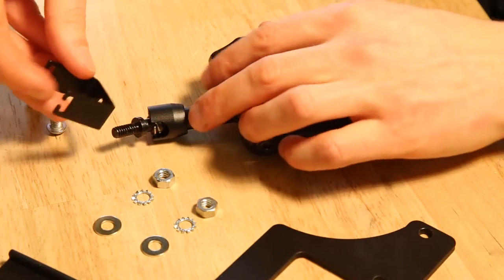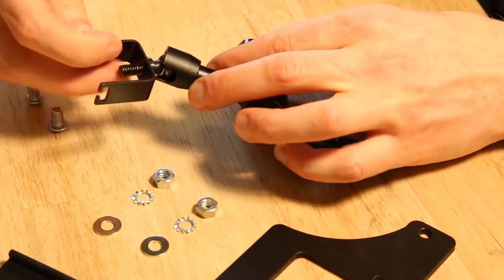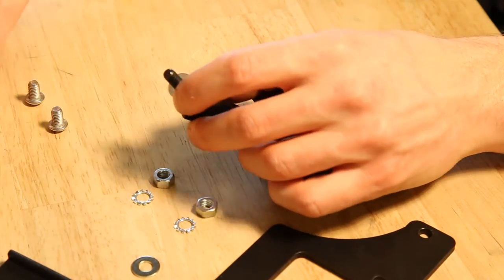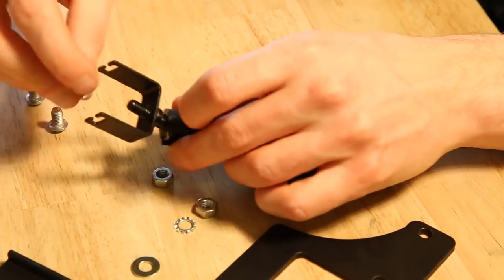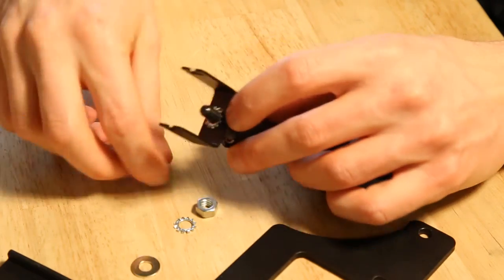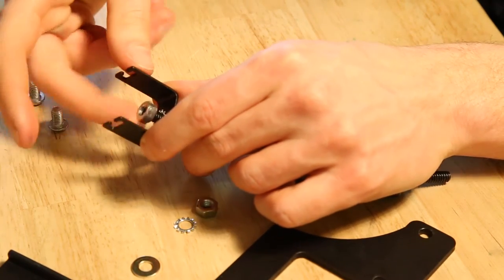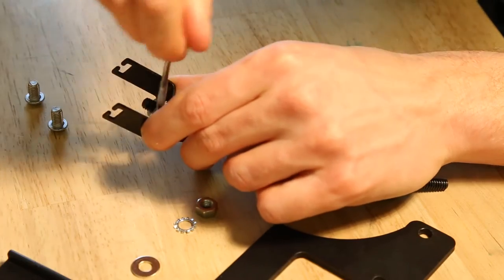Start with the articulating arm and attach the u-shaped blade holder. A flat washer goes in between the u-frame and the arm. Then tighten it down with a tooth lock washer and hex nut. Use the 10 millimeter wrench.